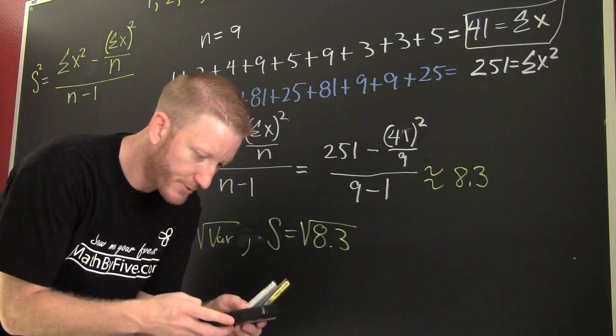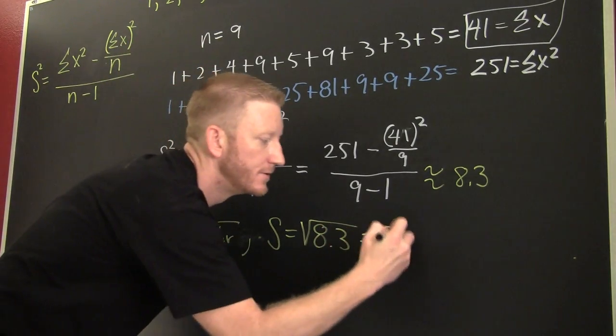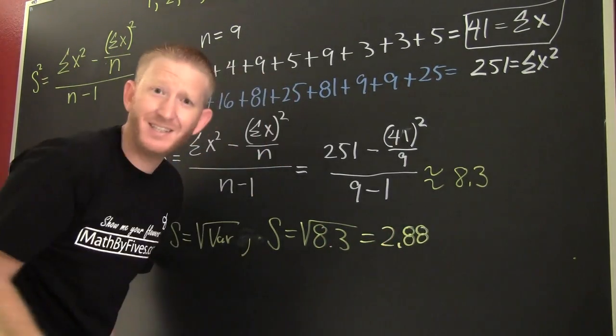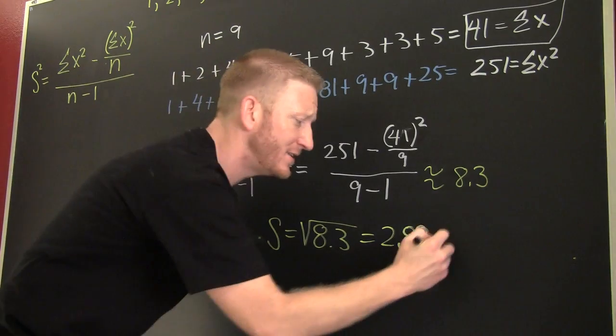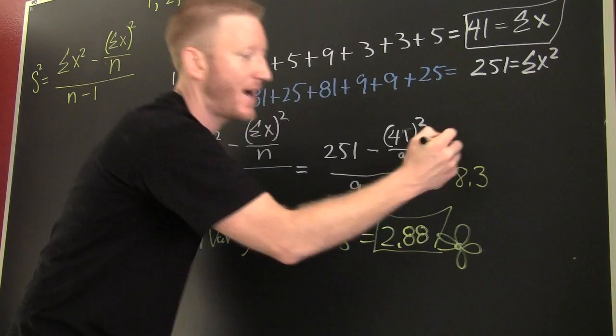Let's get it! Square root of 8.3 is 2.88! Boxing flower! Ah, you get one too!